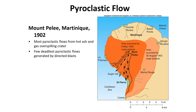An infamous pyroclastic flow was Mount Pelée, which erupted on the island of Martinique in 1902. Most pyroclastic flows form from hot ash and gas overspilling the crater. The few deadliest pyroclastic flows are generated by direct blasts from an eruption. You can have pyroclastic flows that occur without an eruption — that's actually most pyroclastic flows. But whenever there is an eruption, the largest, most powerful pyroclastic flows occur, and they are usually responsible for the most deaths.